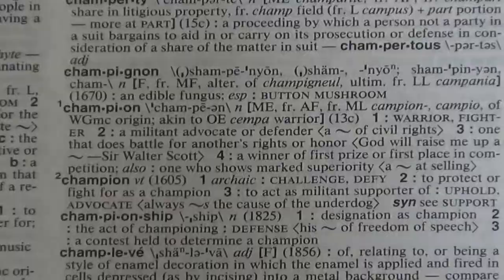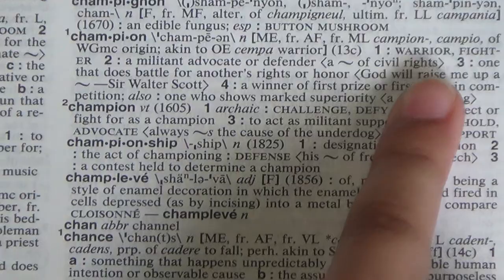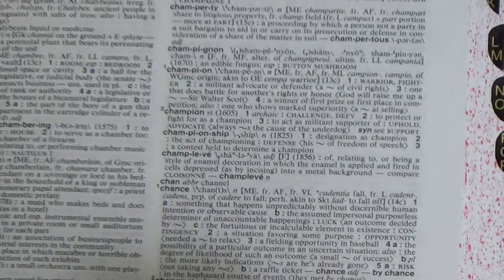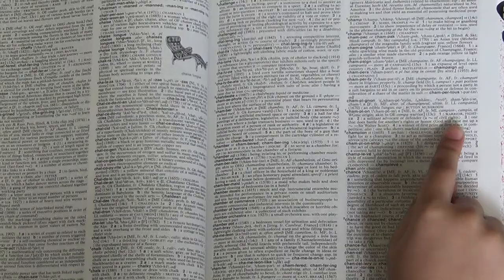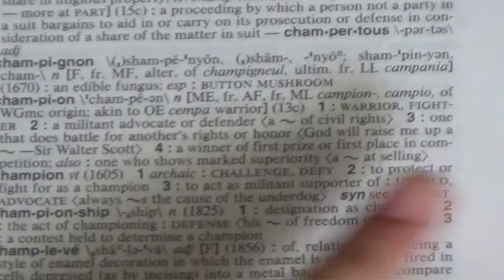Instead of just saying that champion is someone who won, it will list that champion really means warrior — referencing you to go to other sections to find what the definition of warrior is. It's getting even more detailed: we have four definitions in the first sense, which is a noun, and in the second, which is a verb. It says VT here, which I'm guessing is transitive verb, meaning to challenge.